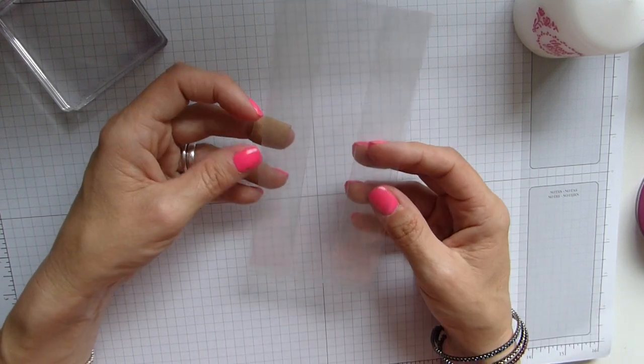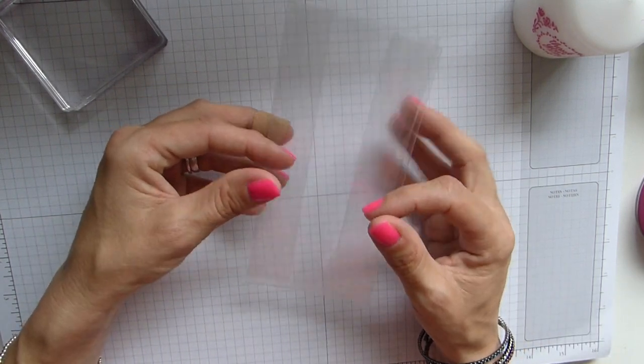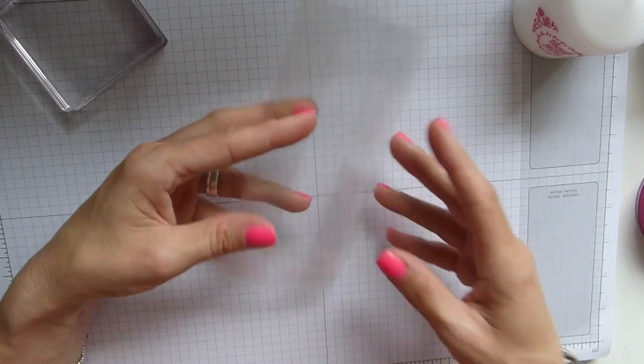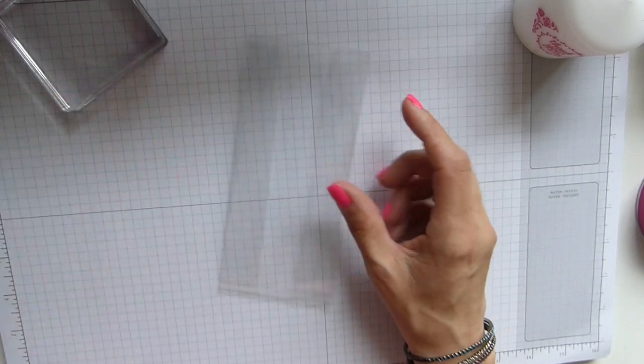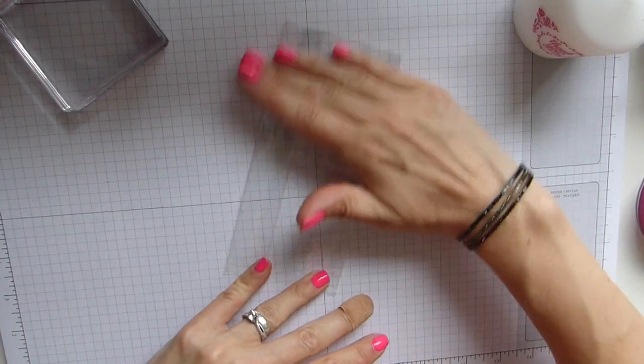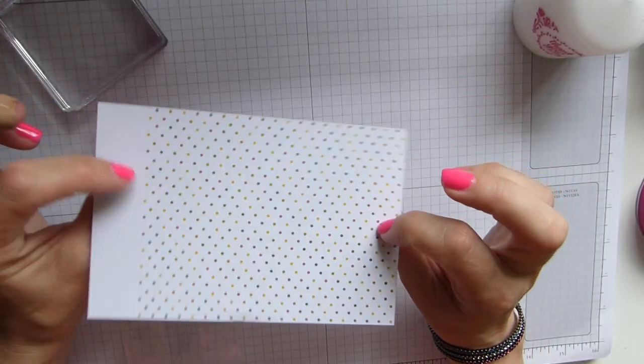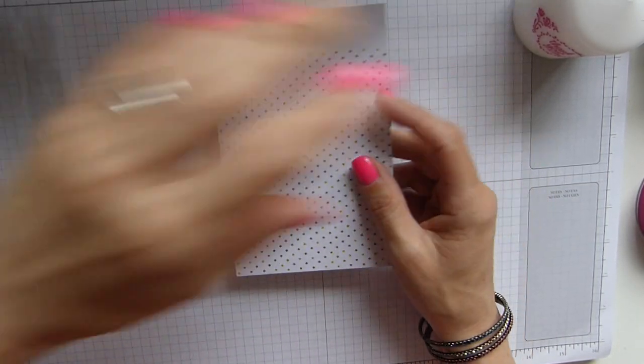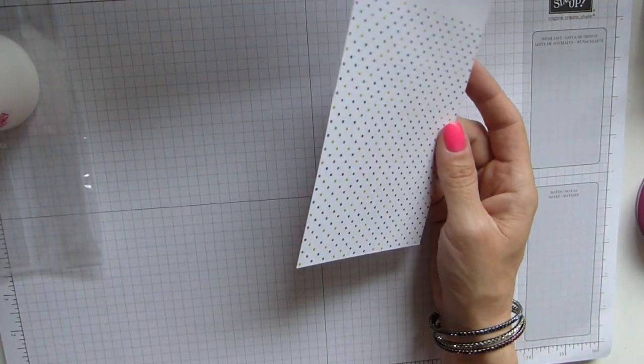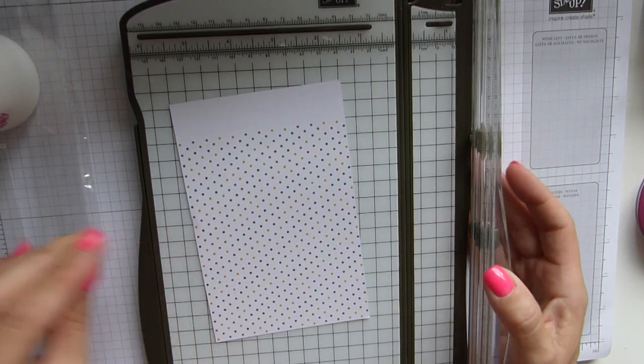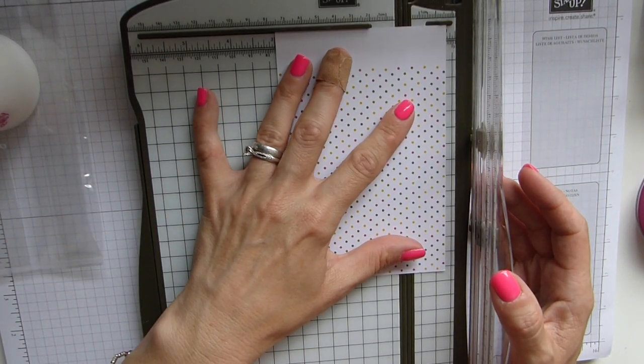These are our gusseted cellophane bags, the medium sized ones. Then I've got one of the memories and more cards which I mentioned previously. All you need to do is just trim one of the larger cards down so you need to trim it to three inches wide.